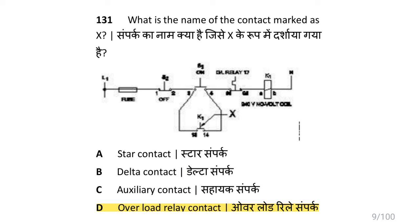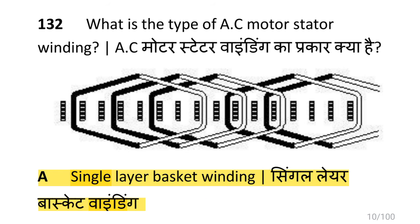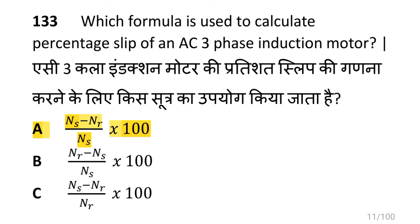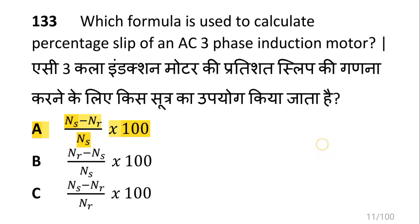The contact marked as X is the overload relay contact. The type of AC motor stator windings is single layer basket winding. The formula to calculate percentage slip of an AC three phase induction motor is: (synchronous speed minus rotor speed) divided by synchronous speed, multiplied by 100.